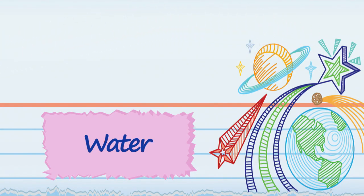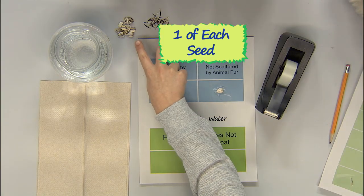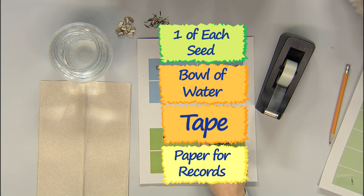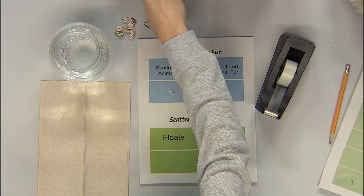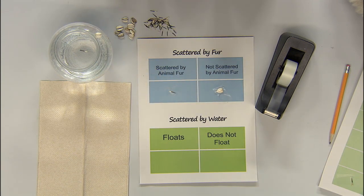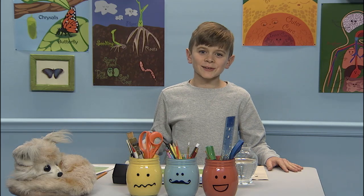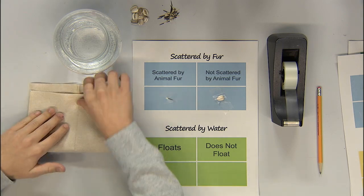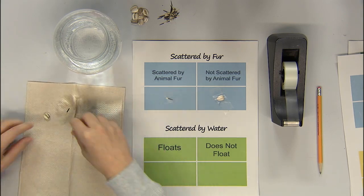Last experiment: water. For this, you will need one of each seed, a bowl filled with water, tape, and paper to record your results. You might want some paper towels, too. Place each seed in the water. Amazing! Look at what those seeds are doing in the water! Does your seed sink to the bottom or float on top? A seed that floats can travel in water. Record your results. Tape the seeds in the right box on your result paper. You might want to dry off your seeds first.